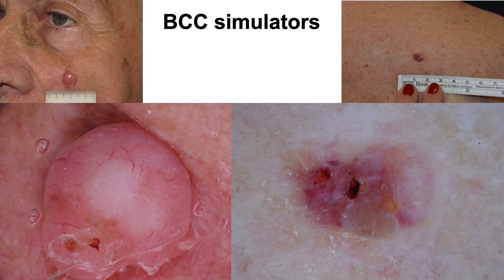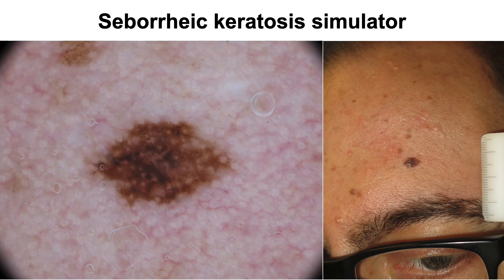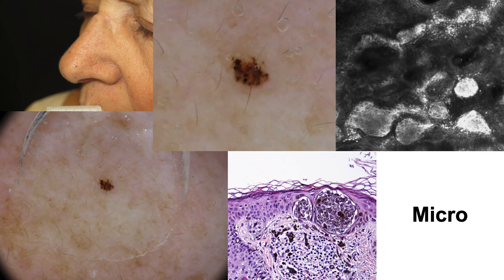These are melanomas simulating basal cell carcinomas. However, here you can see a melanoma simulating a seborrheic keratosis. Here, you have a very small, tiny melanoma, which is the smallest I have ever seen in my life.